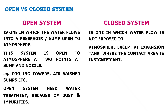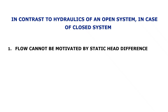There are two kinds of systems: open and closed. Open systems include cooling towers and air washers, where there is a break in the loop. In closed loop systems, applicable for chilled water applications, water comes into direct contact with air in open systems and must be treated for dust and impurities, otherwise scaling or microbial growth can impact chiller performance. In contrast to the open system, in a closed system flow cannot be motivated by static head difference — the pump must overcome frictional losses.